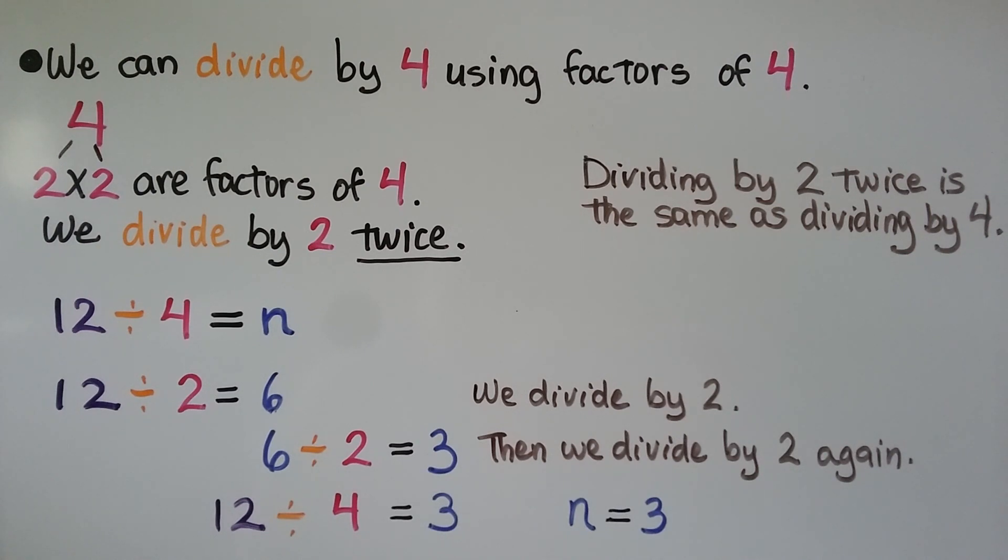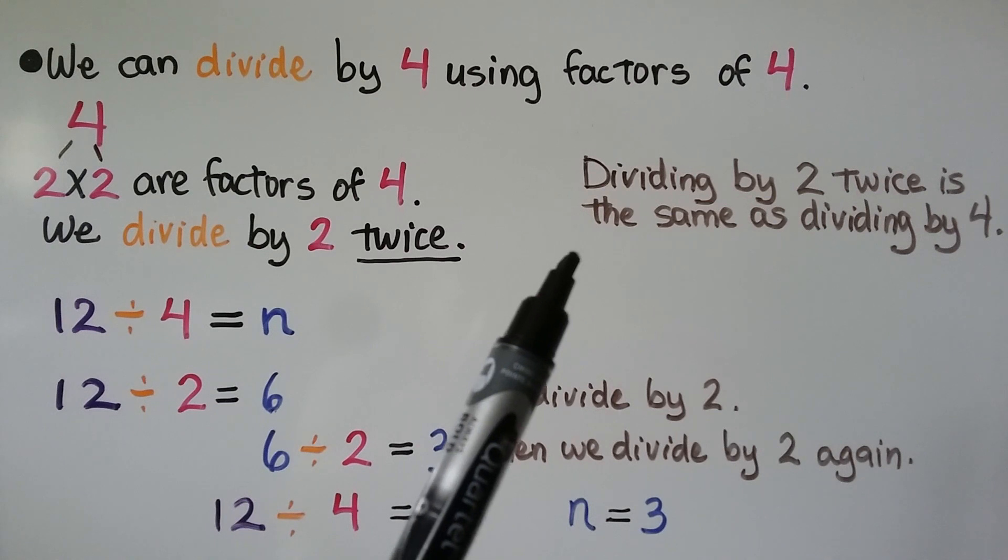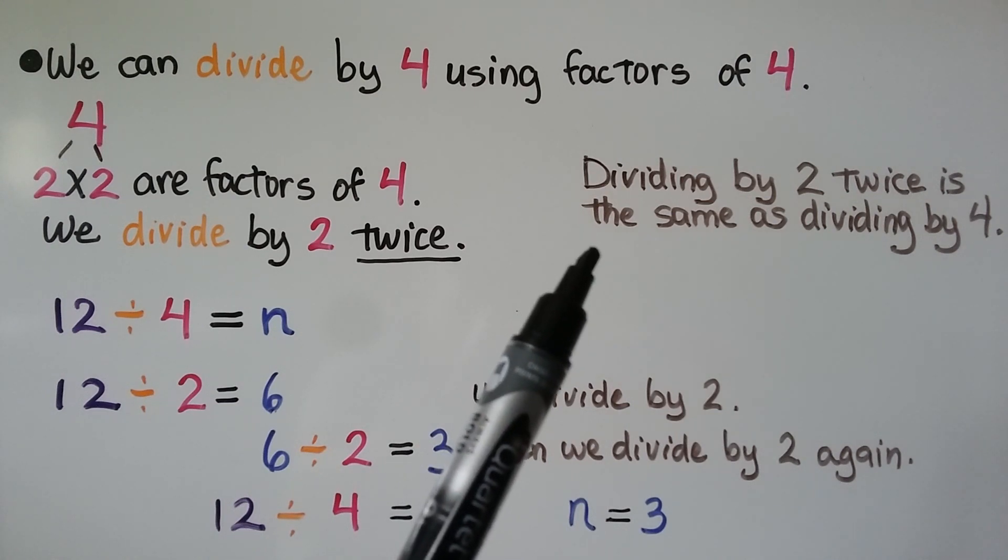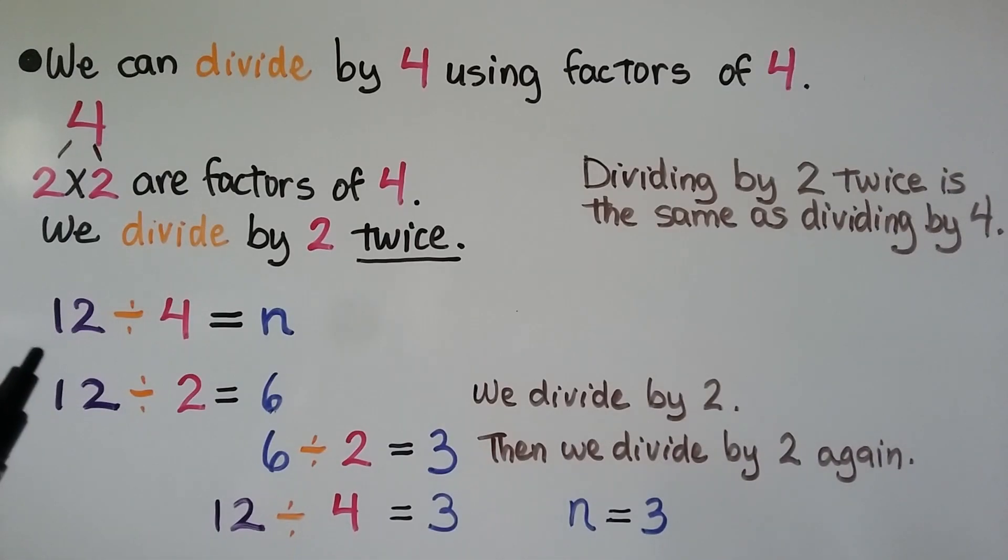We can divide by 4 using factors of 4. 4 can be broken into 2 times 2. 2 and 2 are factors of 4. I'm going to divide by 2 twice. Dividing by 2 twice is the same as dividing by 4. We have 12 divided by 4 is equal to n.